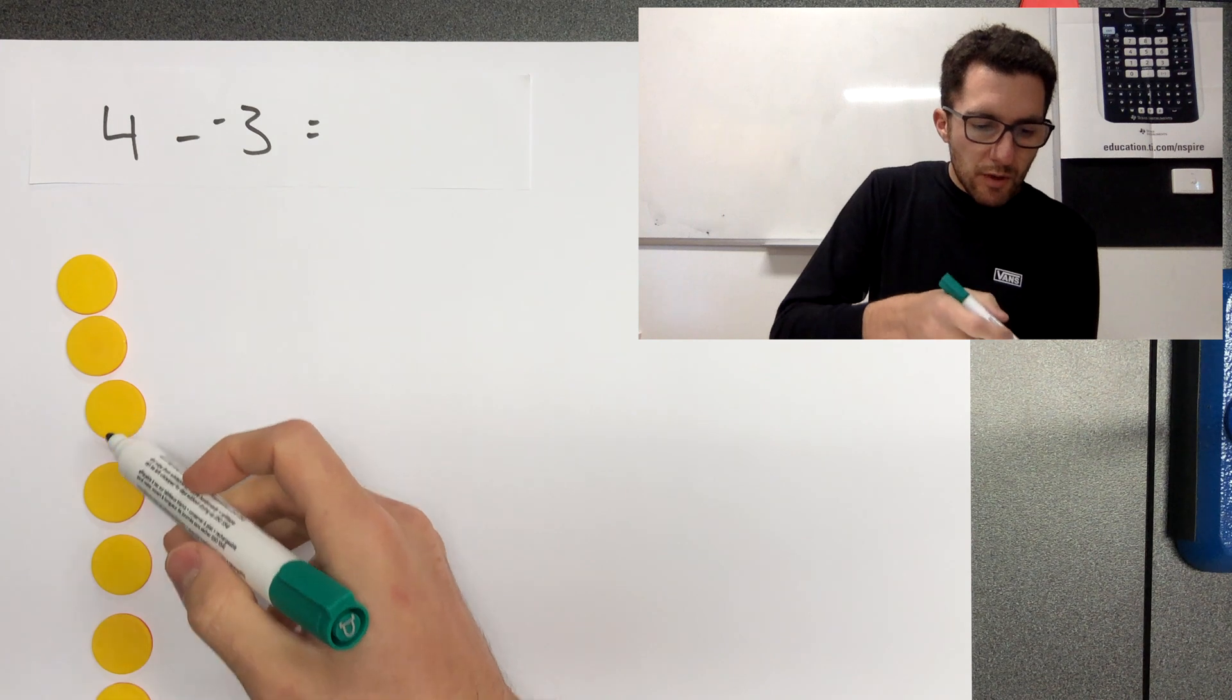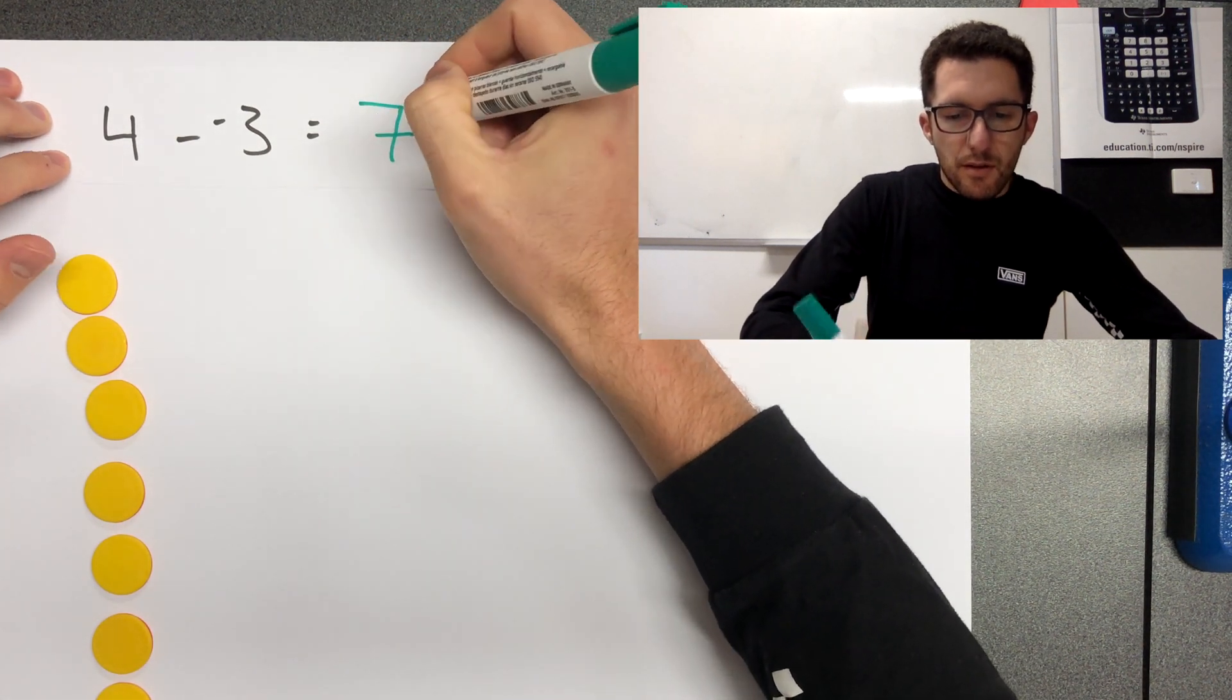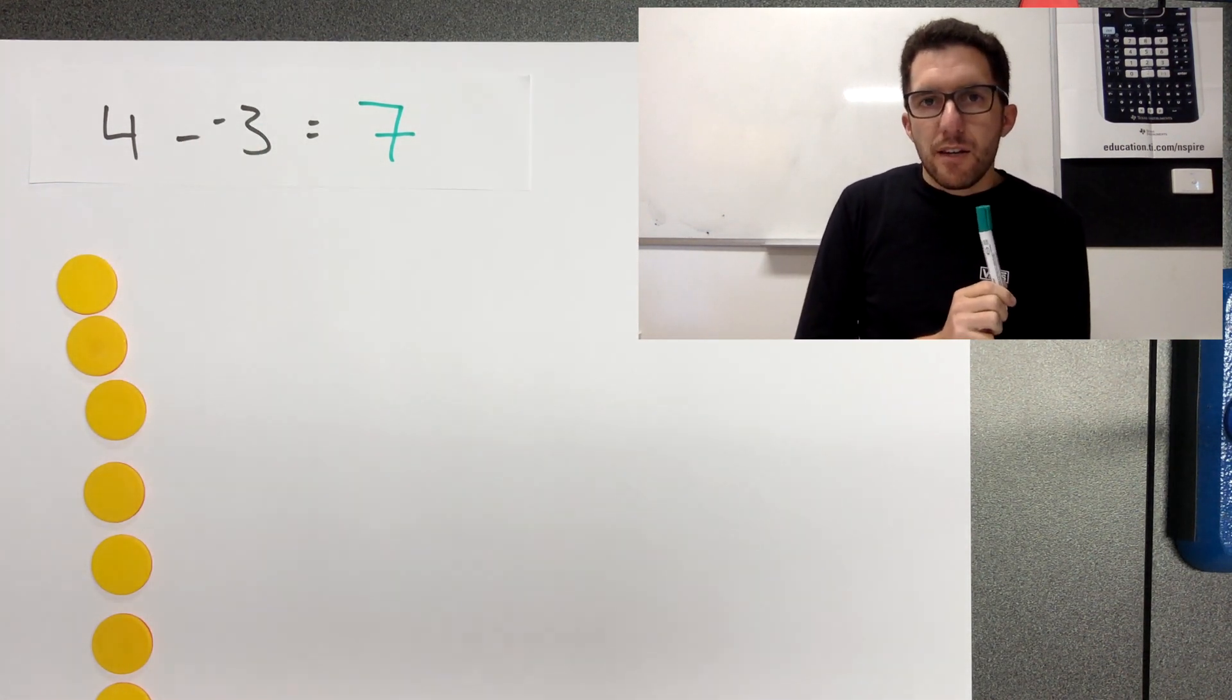What are we left with as the value of these tokens? One, two, three, four, five, six, seven. So four subtract negative three equals seven.